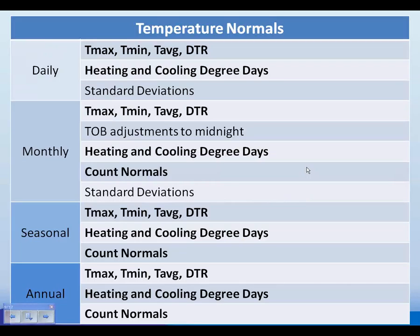This is the suite we have for temperature normals, all slated for release June 30th. The bold items are part of the NWS release for AWIPS. At the daily timescale: T-maximum, T-min, T-average, diurnal temperature range, heating and cooling degree days, and standard deviations. Monthly: all those plus time-of-observation adjustments to midnight and count normals — for example, the number of days in a month where T-min is less than 32 degrees. For seasonal and annual timescales we have T-max, T-min, T-average, DTR, heating and cooling degree days, and count normals.